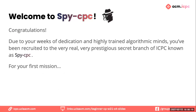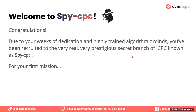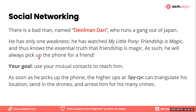Congratulations! Due to your weeks of dedication and your highly trained algorithmic minds, you've been recruited to the prestigious secret branch of ICPC known as SpyCPC. For your first mission, there's a bad man named Devilman Dan who runs a gang based out of Japan. He has one weakness: he's watched My Little Pony — Friendship is Magic — and thus knows that friendship is magic. He will always pick up the phone for a friend, or a friend of a friend.